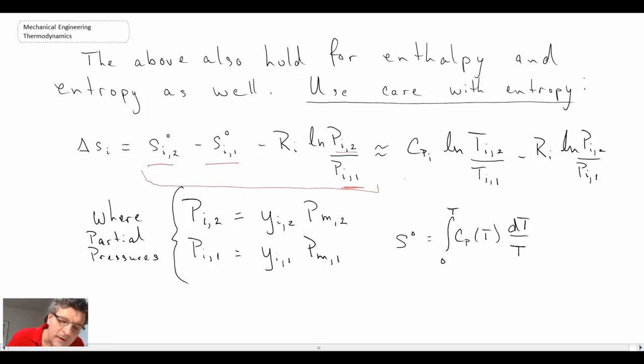The approximation is in the second part there. So that is how we can determine property change when we have a gas mixture. What we're going to do next is take a look at an example problem where we have to apply all these things. We'll be looking at using the first law as well. I think, yeah, they want us to calculate entropy generation. So we'll move ahead and look at that in the next segment.